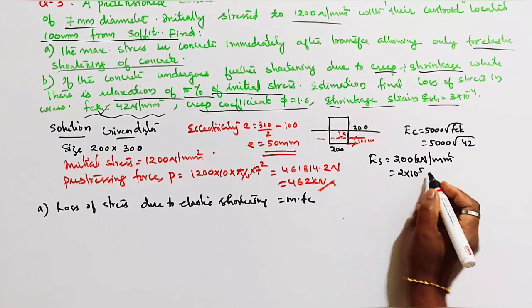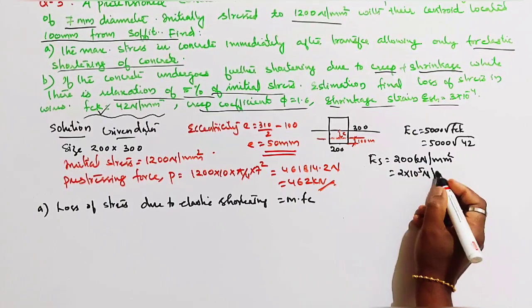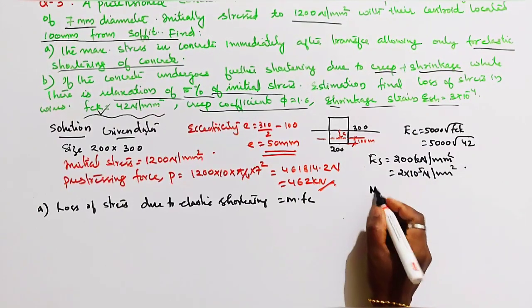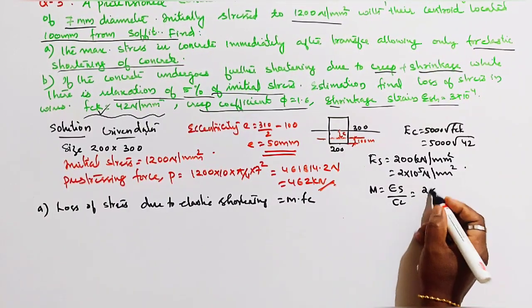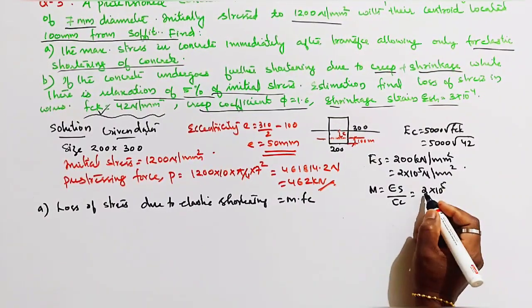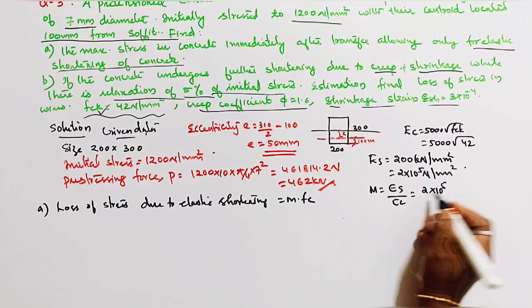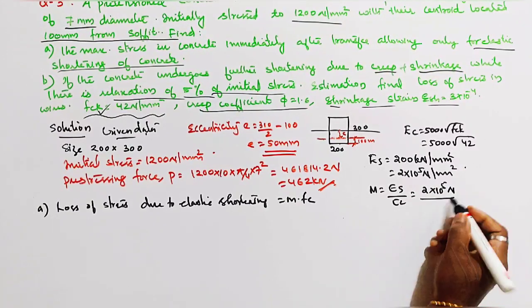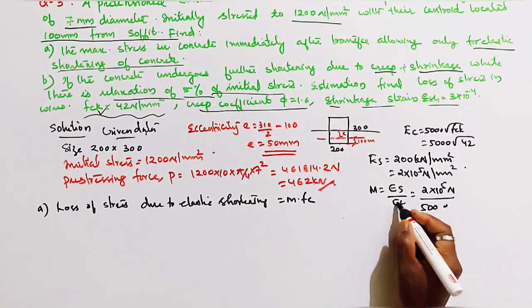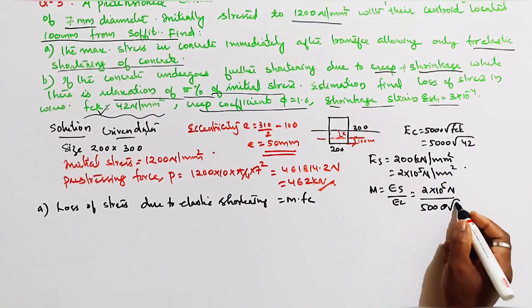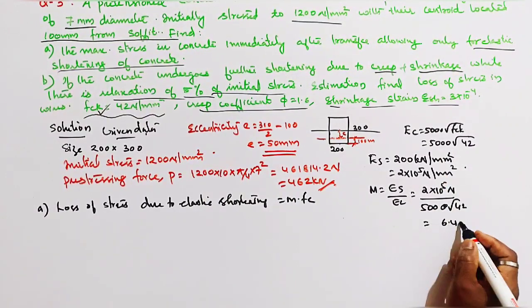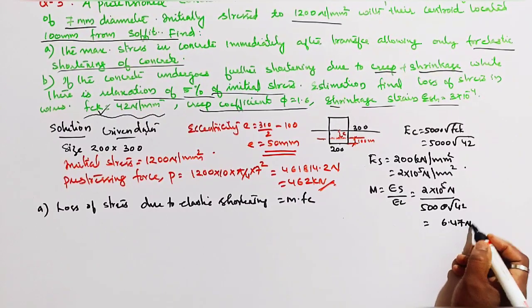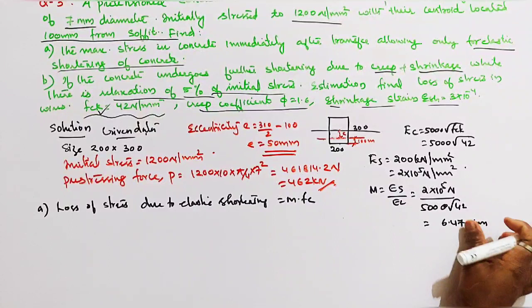ES = 2 × 10⁵ N/mm². Therefore, m = ES / EC = (2 × 10⁵) / (5000 × √42) = 6.47.